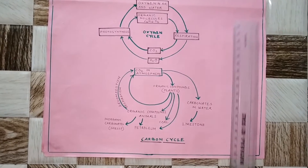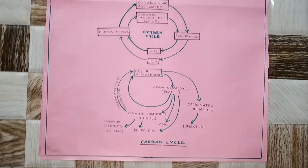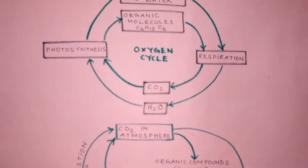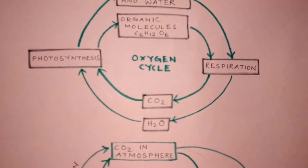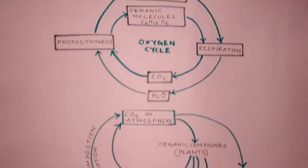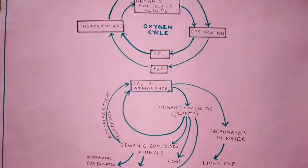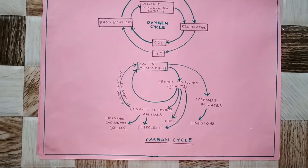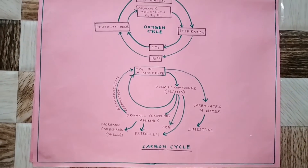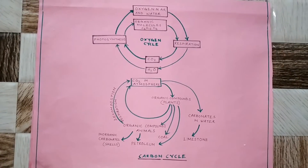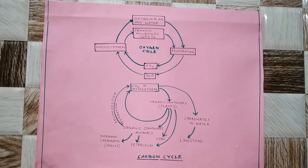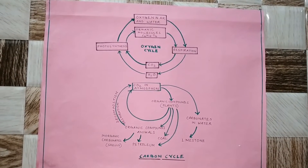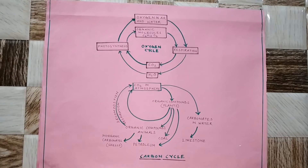Oxygen is abundant in the air, but it is also found in the combined state. It is found combined with other elements like carbon dioxide. In carbon dioxide, oxygen is mixed with carbon. Oxygen is also present in the form of oxides in most metals and in biological molecules.